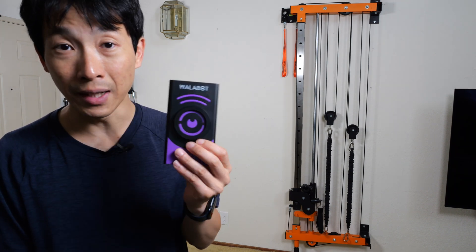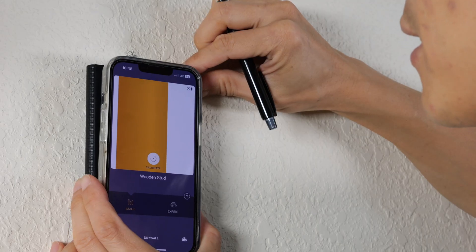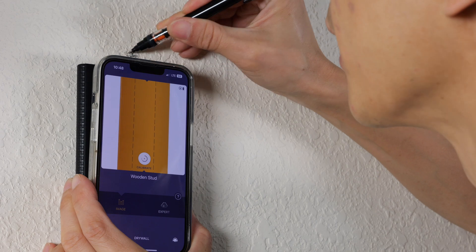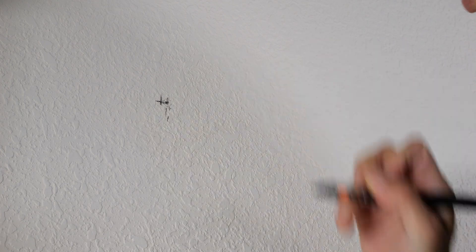I'm going to use a Wallabot and find the stud centers on the left side now. The top holes are here and here. Finding the center, I'm going to mark it here. For the hole at the top, that's at the dead center. And I'll mark that as well.